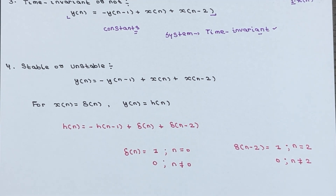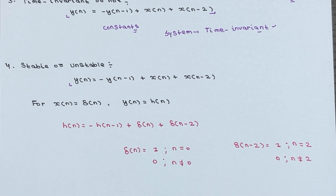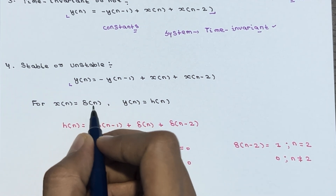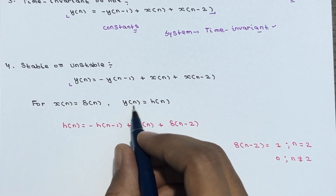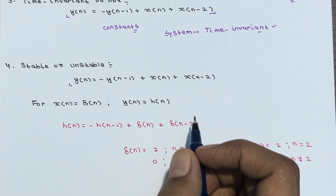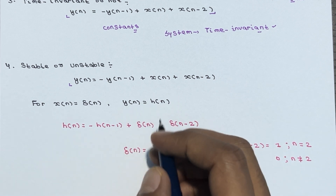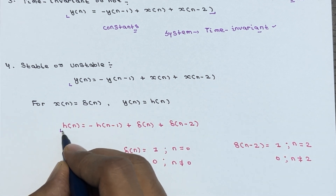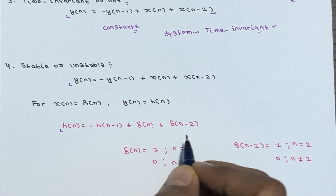Now let's check for stability — stable or unstable. For x(n) = δ(n), we apply the impulse input to get the impulse response, since the stability condition is based on the impulse response. y(n) becomes h(n), so: h(n) = -h(n-1) + δ(n) + δ(n-2). Recall δ(n) = 1 when n=0 and 0 otherwise; δ(n-2) = 1 when n=2 and 0 otherwise.